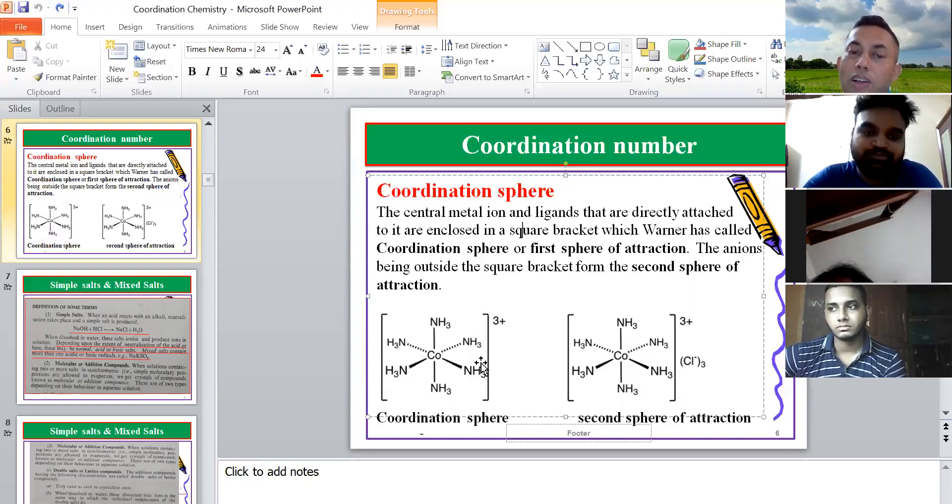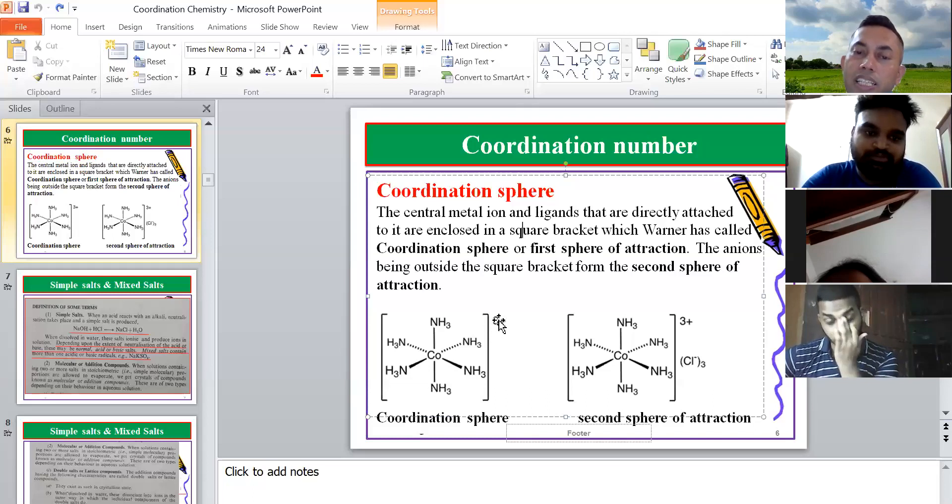The NH3 is a neutral ligand. What is it? Neutral ligand. It doesn't have any charge. If the NH3 doesn't have any charge, the 3 plus will be necessary. Cobalt. How do you know this 3 plus? Cobalt. And then the cobalt oxidation state is 3 plus. Oxidation state? 3 plus.